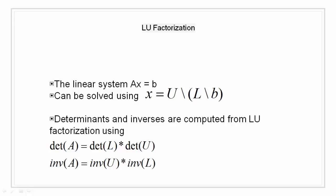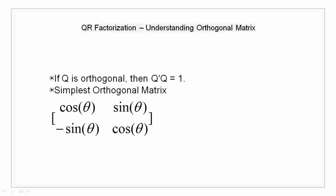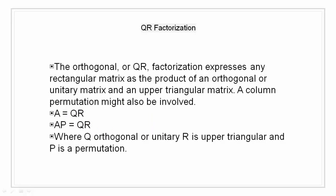QR factorization. Before moving to QR factorization it is essential that we take a look at what are orthogonal matrices. An orthogonal matrix or a matrix with orthonormal columns is a real matrix whose columns all have unit length and are perpendicular to each other. If Q is orthogonal then Q transpose Q equal to 1. Simplest orthogonal matrix is a two dimensional coordinate rotation that is cos theta sine theta minus sine theta and cos theta. For complex matrices the corresponding term is unitary. Orthogonal unitary matrices are desirable for numerical computation because they preserve length, angles, and do not magnify the errors.